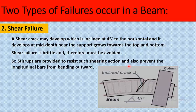It is necessary to mention that in normal practice the spacing between the stirrups near the ends or supports is very small — much less compared to the central portion — because shear cracks appear near the end supports. To avoid shear failure, stirrups are closely spaced in those regions.